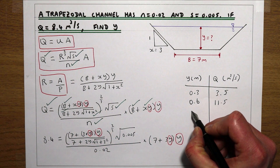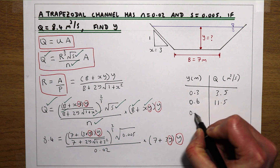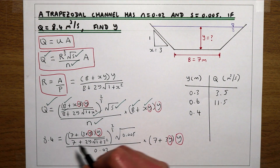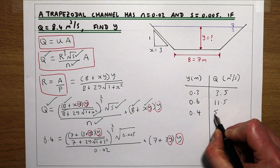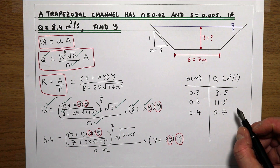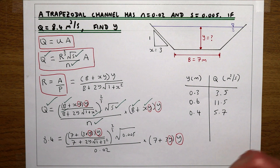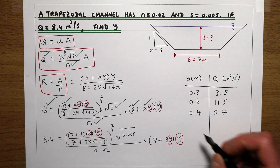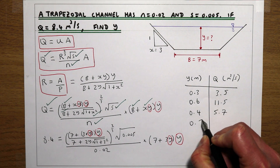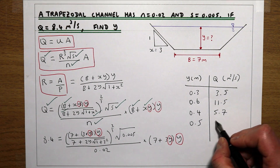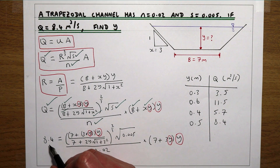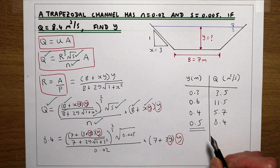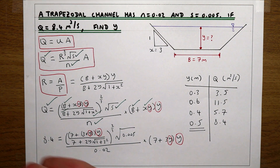Trying Y = 0.4 m gives Q = 5.7 m³/s — still too small, so we increase Y slightly. Entering Y = 0.5 m gives Q = 8.4 m³/s, which is exactly what we're looking for. So the flow depth Y for this channel is 0.5 metres.